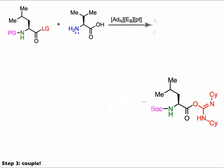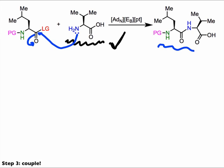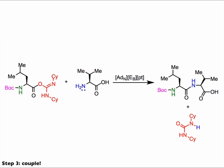With the N-terminus blocked and one carbonyl group ready as an electrophile, we introduce the nucleophilic amino acid. No tailoring of the nucleophilic amino acid is needed because the amino group reacts selectively with the activated electrophile. After addition, elimination, and proton transfer, a peptide bond has formed along with a molecule of dicyclohexylurea.